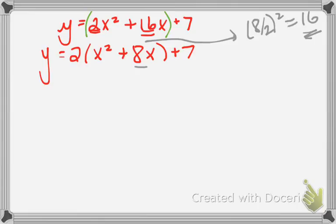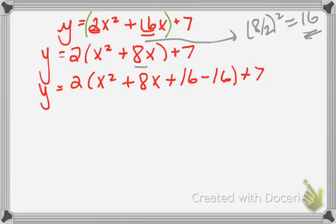I'm going to take this value, and I'm going to add it and subtract it inside the bracket right after the 8x there. So plus 16 minus 16, and the 7 is just going to kind of hang out there for a little while.